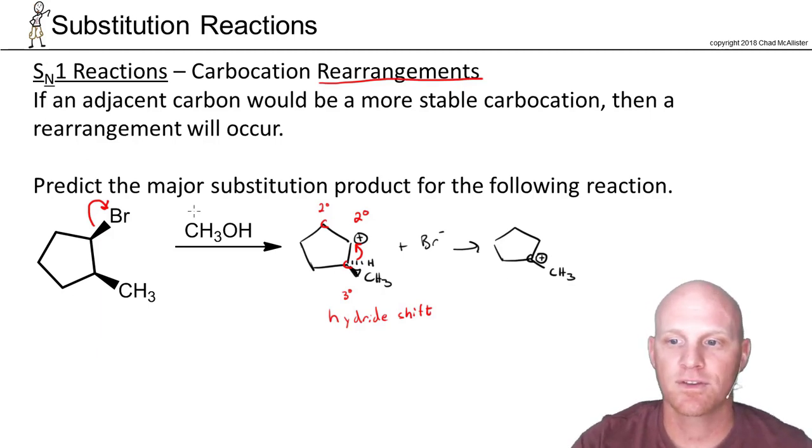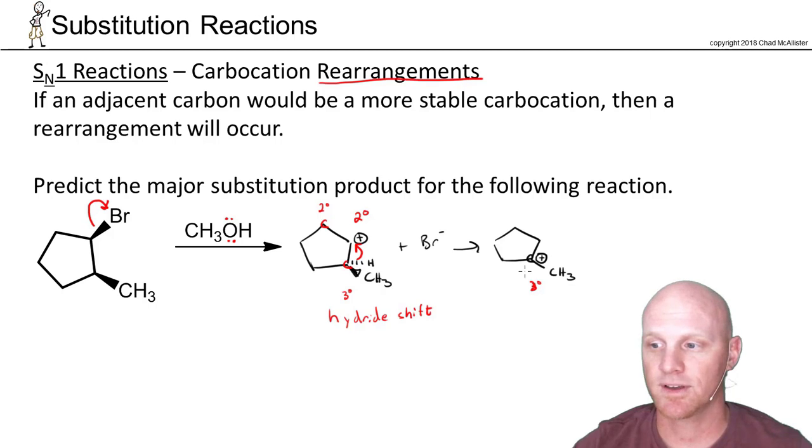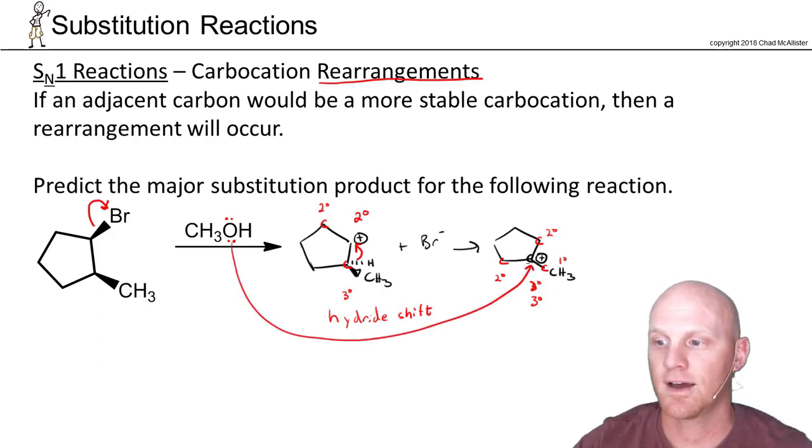Now we've got a tertiary carbocation where we'll do nucleophilic attack. Most carbocation rearrangements only occur once, but you might have two in some cases—we'll see an example shortly. The adjacent carbons—a secondary here, a secondary here, a primary here—none are any better. Our tertiary carbocation is done rearranging, and now methanol will attach.